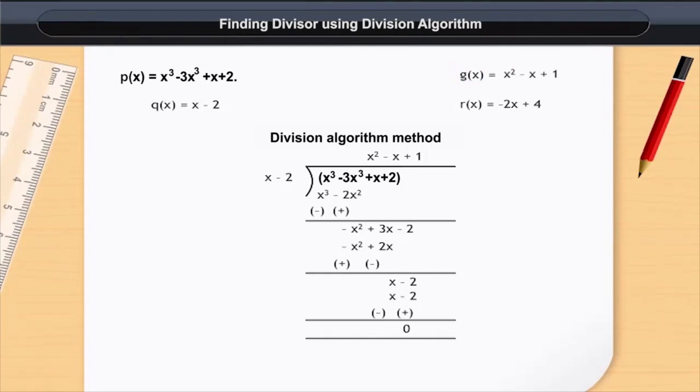Now simplify it and we get (x³ - 3x² + 3x - 2) divided by (x - 2). Now we use the division algorithm method and we get the remainder as 0 and quotient as x² - x + 1.